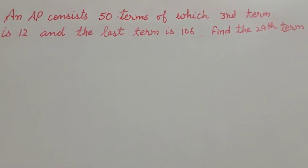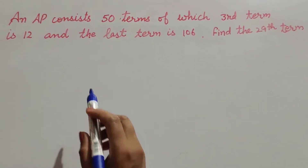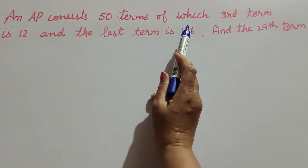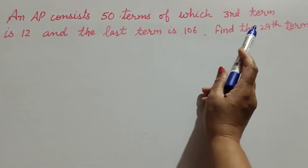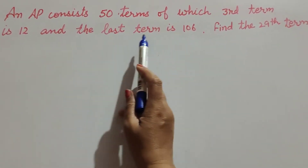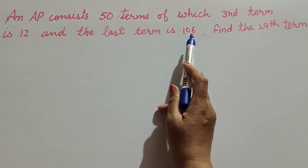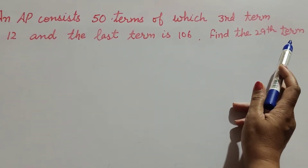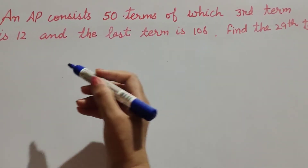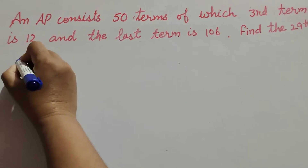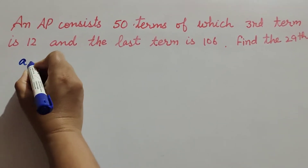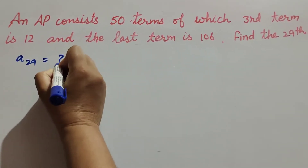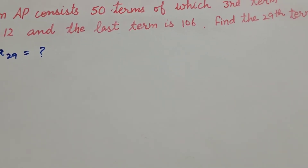Hello friends, welcome to my channel. In this video we discuss an AP consisting of 50 terms, of which the third term is 12 and the last term is 106. Find the 29th term. So in this question we find the 29th term of an AP — A29 is what we have to find.